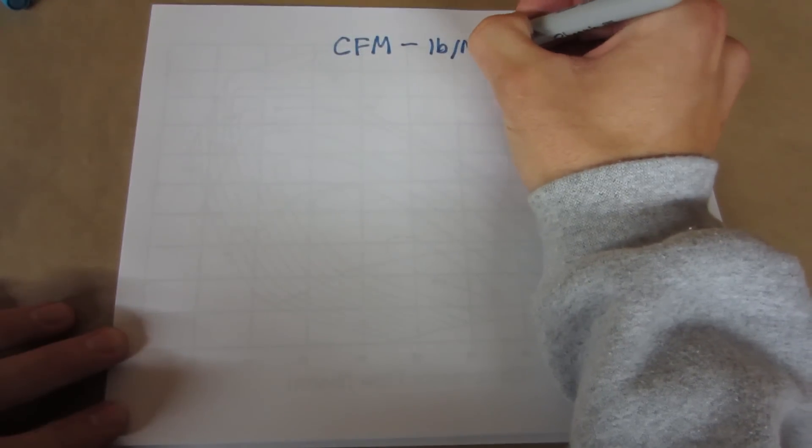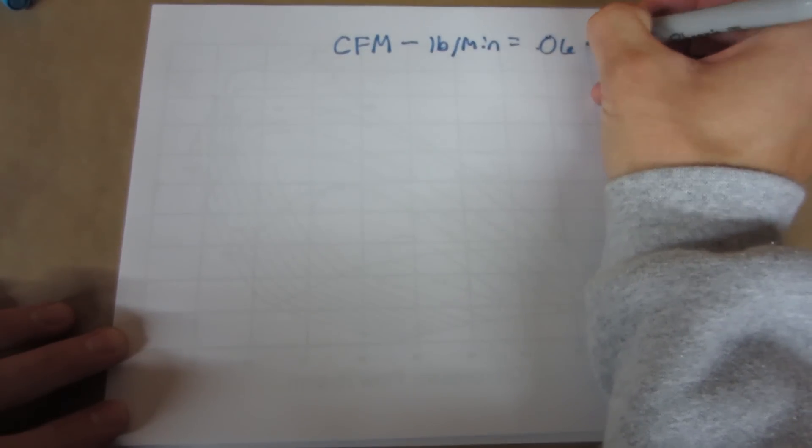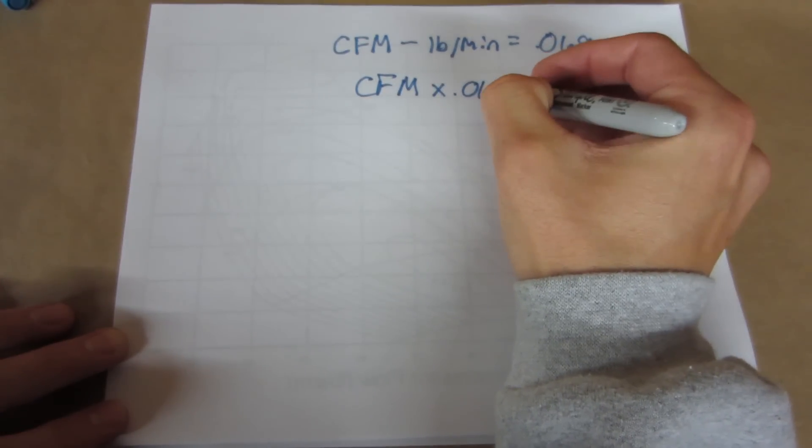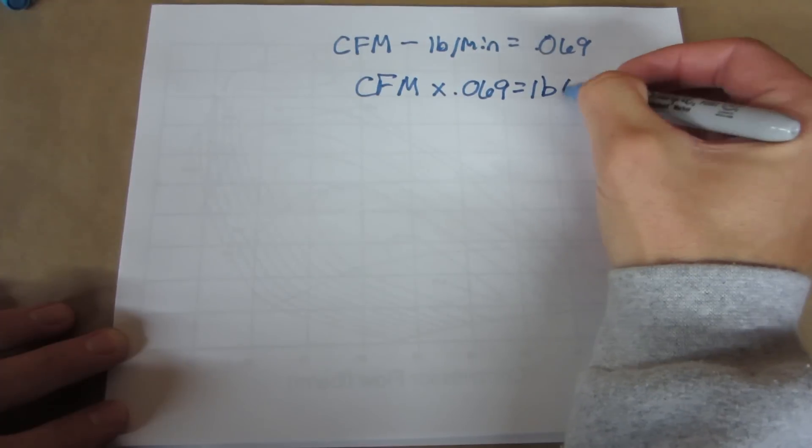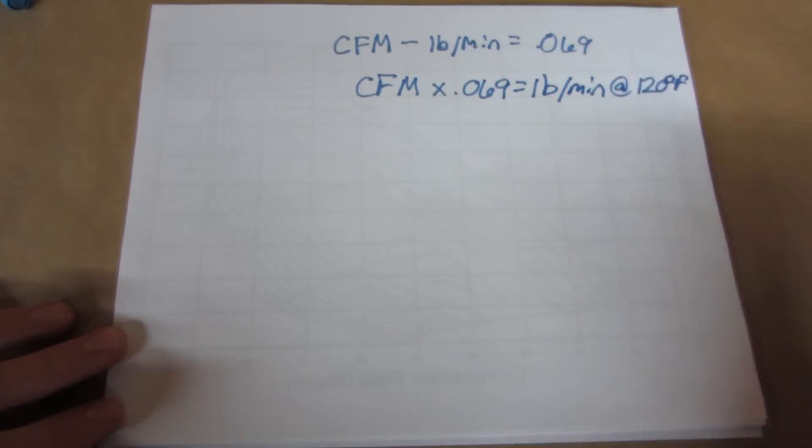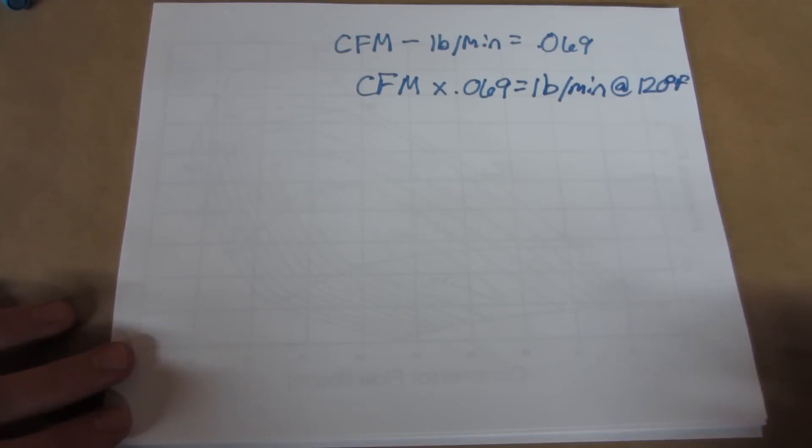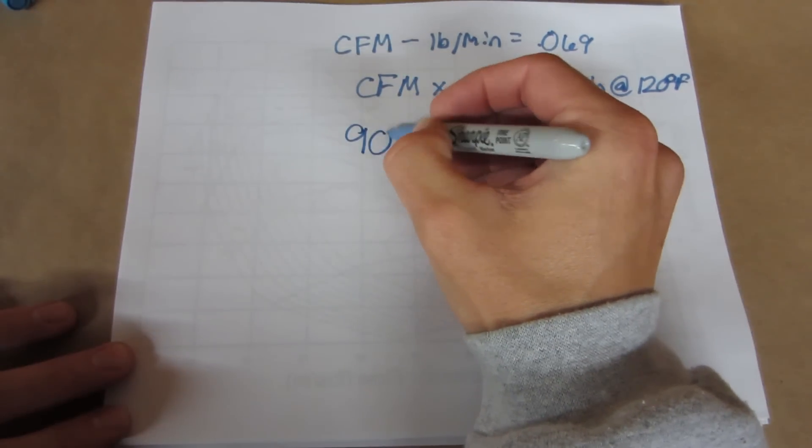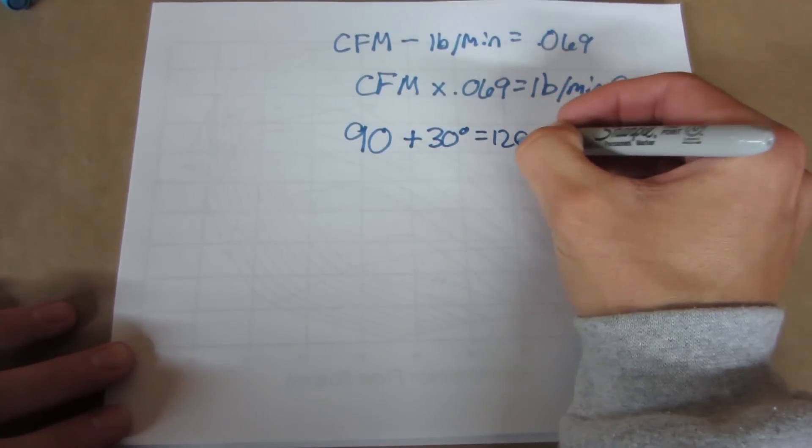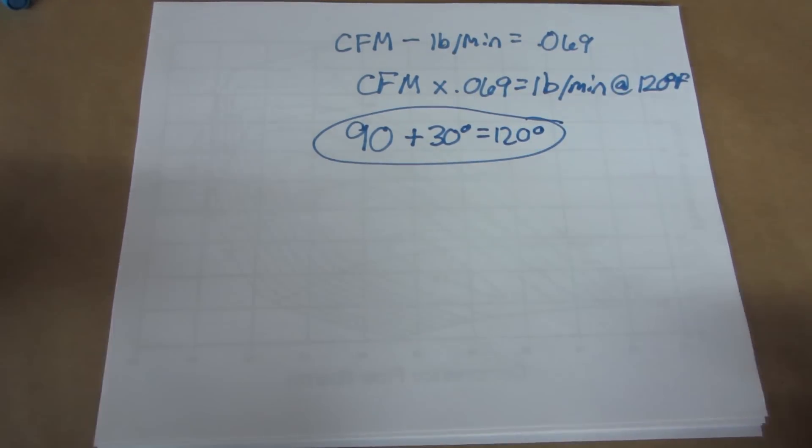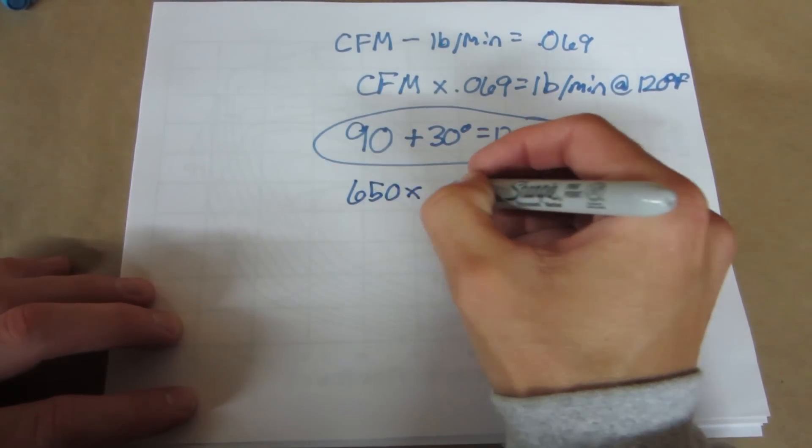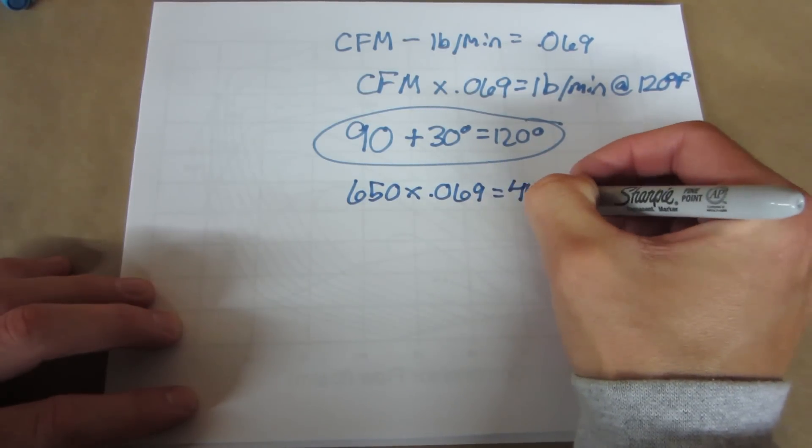Lastly you may find some maps where the airflow is labeled in CFM. This makes things more of a guess because CFM is calculated using temperature and pressure while pounds per minute is not. There is a general factor to easily convert CFM to pounds a minute and that factor is .069. The equation would be CFM times .069 equals pounds a minute at approximately 120 degrees Fahrenheit. If you are able to maintain temps under 100 degrees use the figure of .071 because it is equal to air at 100 degrees Fahrenheit.